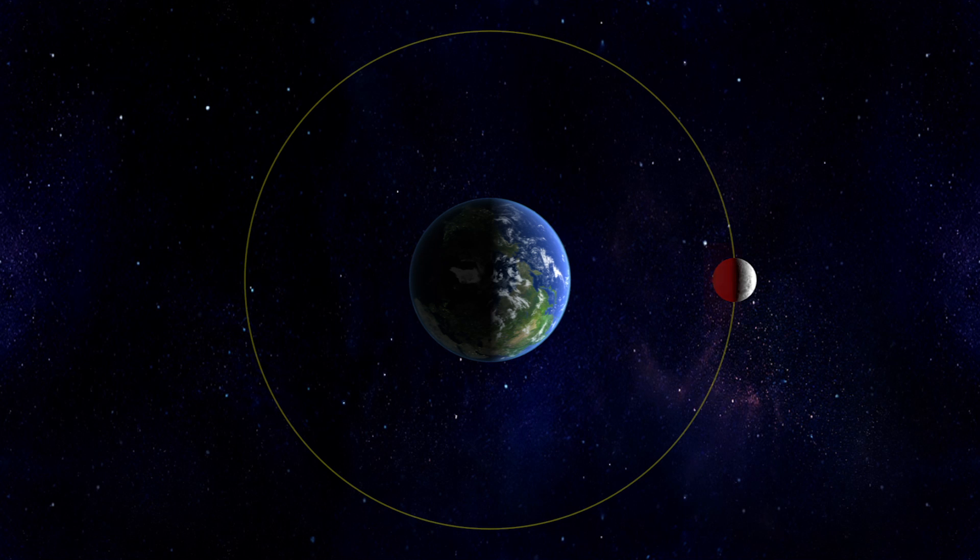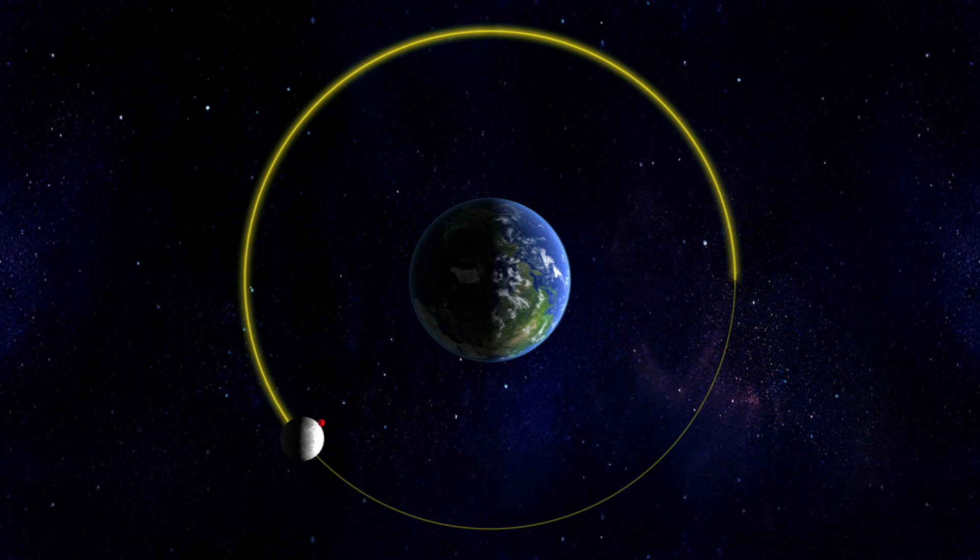Called the dark side, most of the far side of the Moon is never visible from Earth because the Moon's orbital and rotational periods are nearly synchronized.